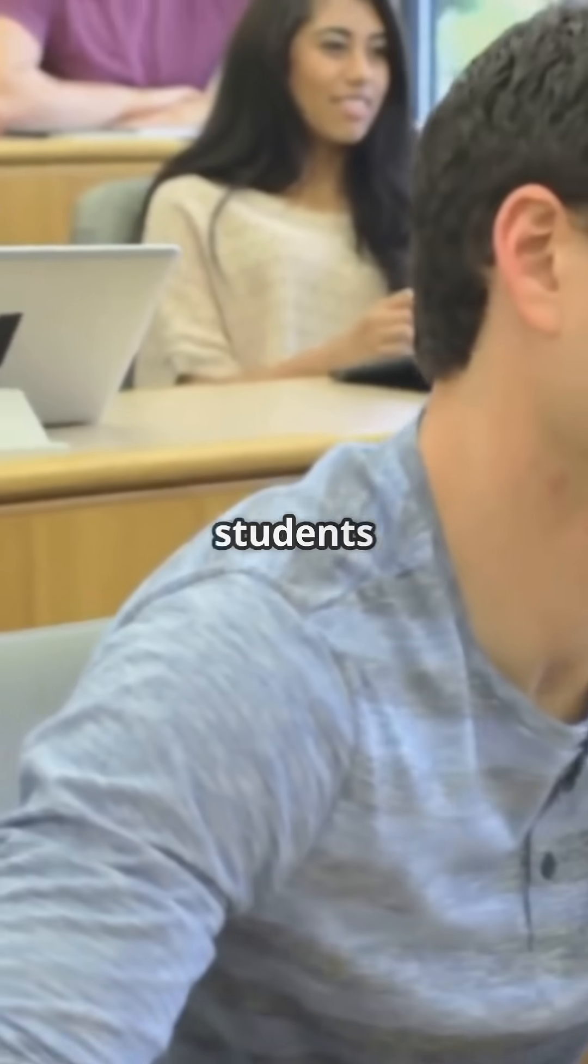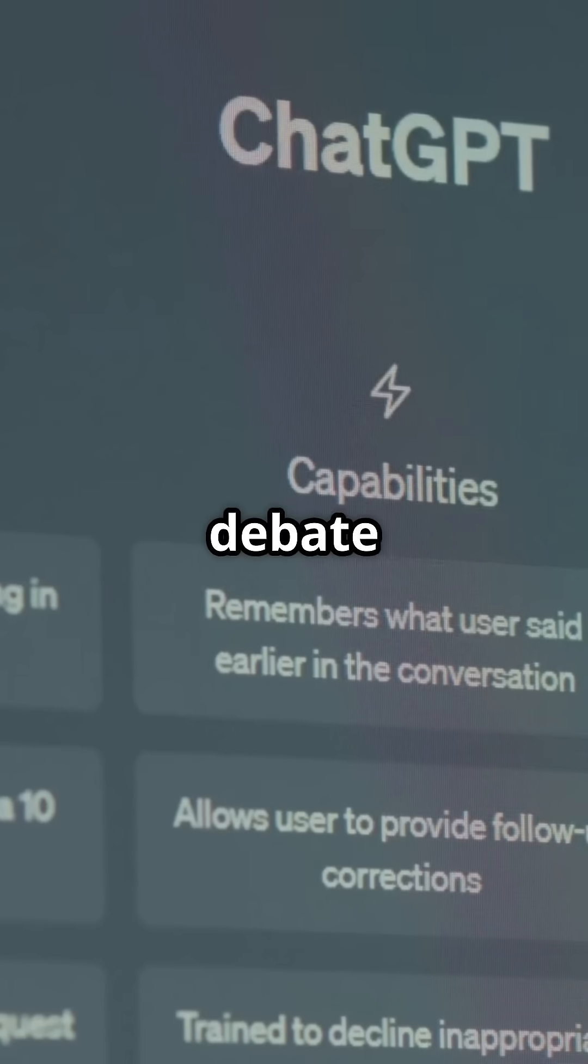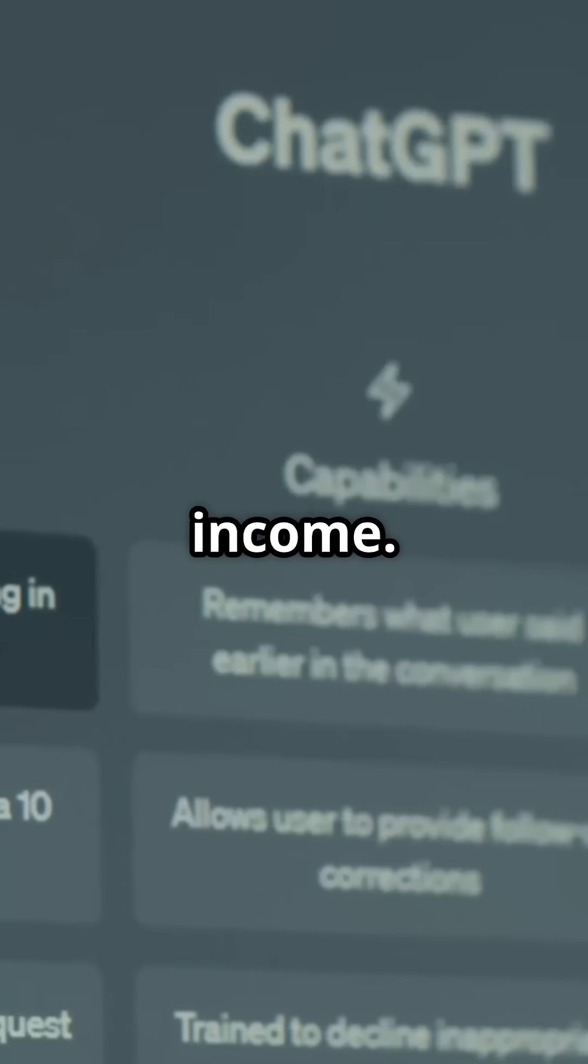Try this. Ask students to use AI like ChatGPT to argue both sides of a hot topic issue. For example, have ChatGPT debate for and against universal basic income.